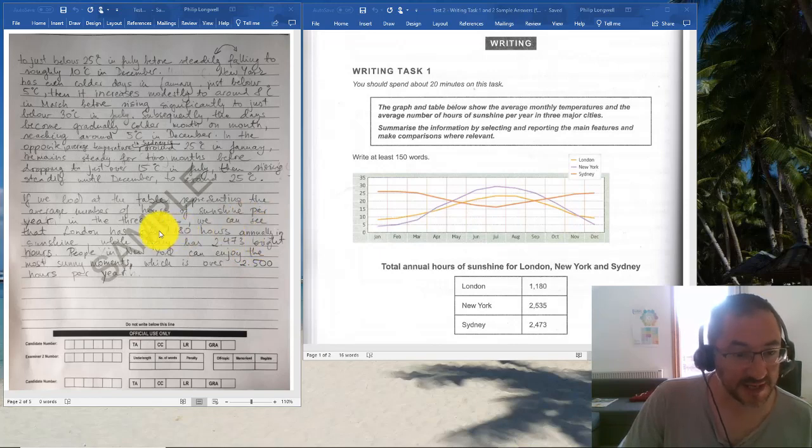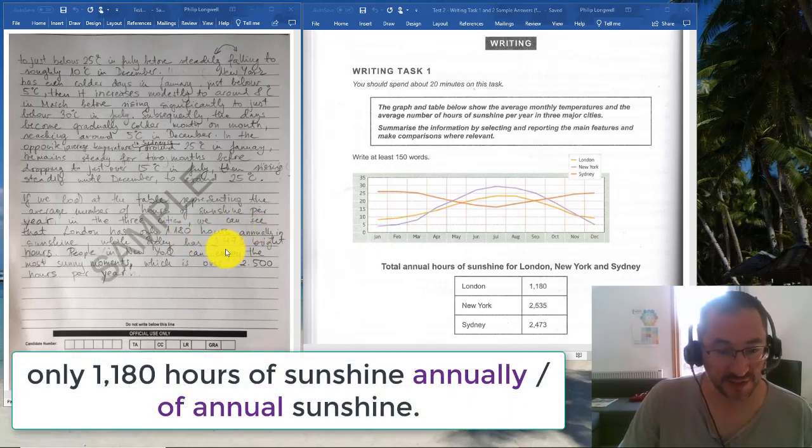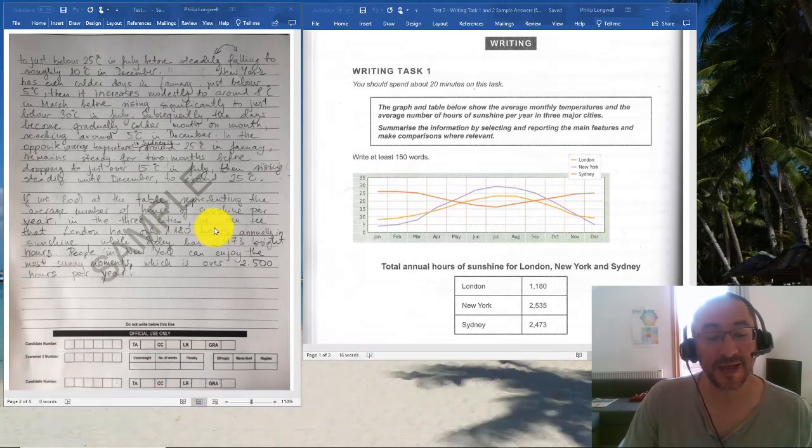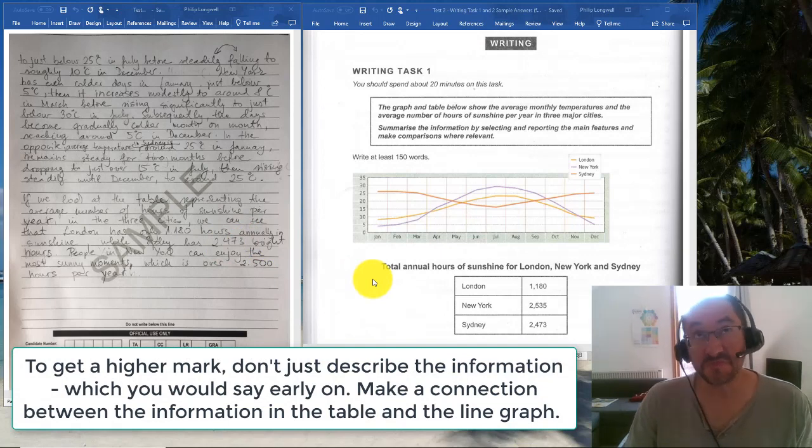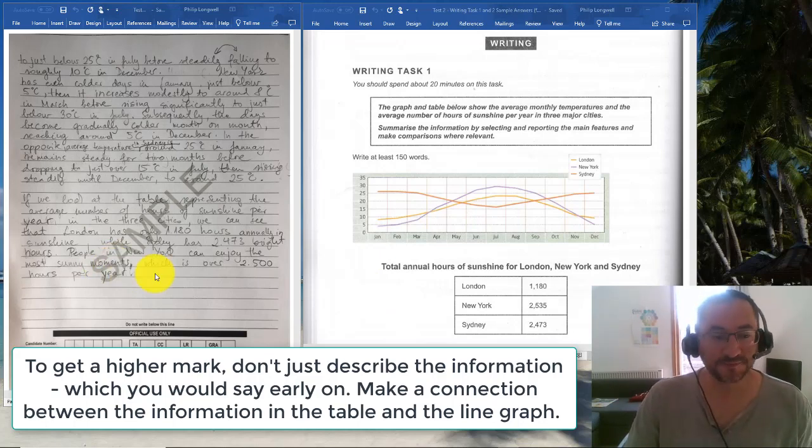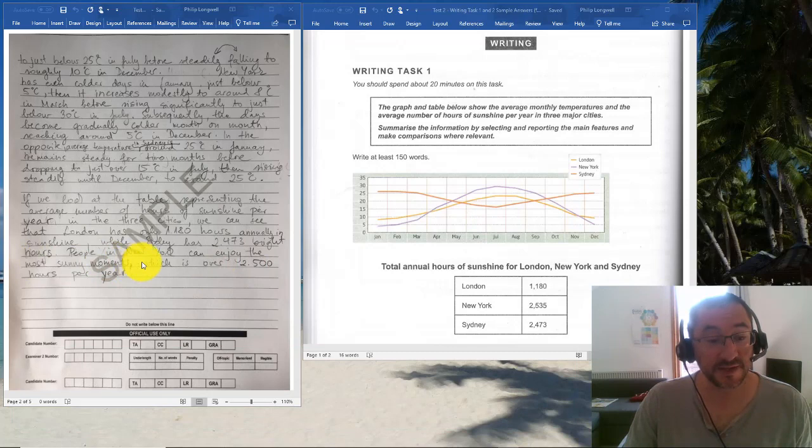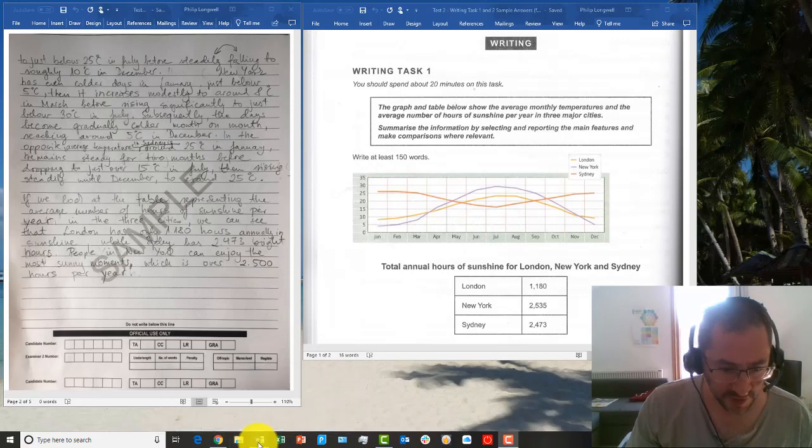This is inaccurate in terms of grammar: you would say "has only 1,180 hours annual sunshine," or if you wanted to use annually as an adverb you would say "sunshine annually"—1,180 hours sunshine annually. Not "annually sunshine"—that's a grammatical error. You've got some synonyms in "bright hours," so bright is a simple synonym for sunny. "Most sunny moments" is a little bit casual—"periods" would have been a better word. And I would say "enjoy the most sunny periods with over"—not "which over," that's a grammatical error—"with over 2,500 hours per year."